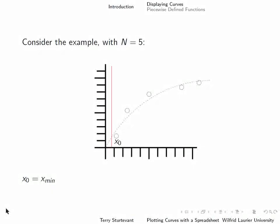So here's an example with five points. Here we have our minimum value at the left end of the graph, and our maximum value at the right end. So now what we do is calculate a point one-fifth of the way along, two-fifths, three-fifths, and four-fifths of the way along.